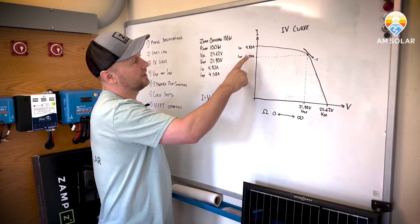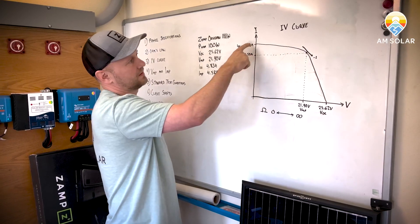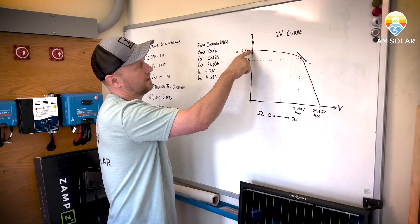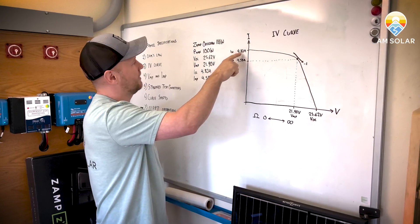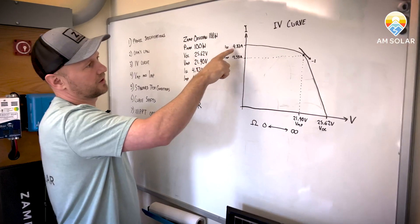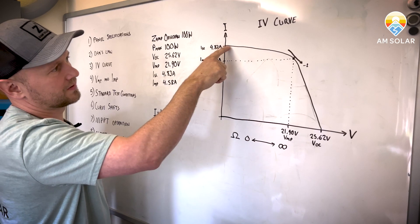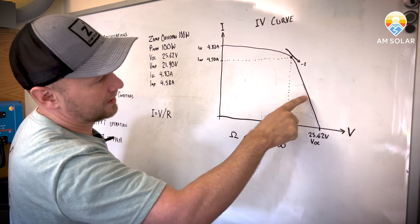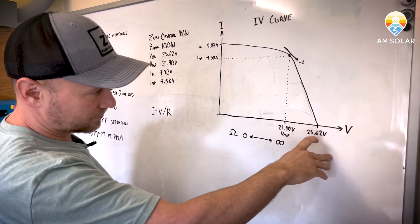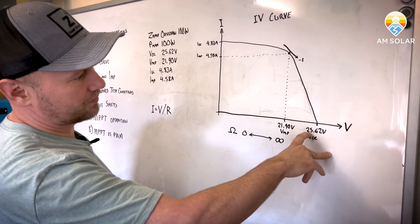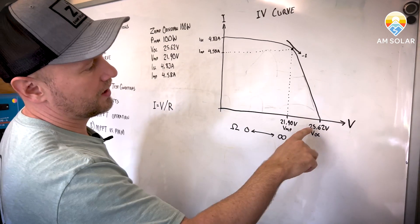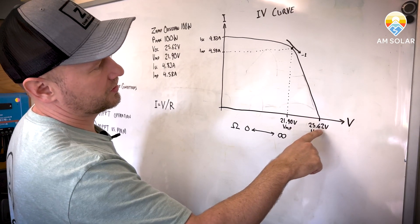So we see that this line, it crosses the Y axis or I for current right here at the ISC value. So current short circuit 4.83 amps. And it goes down like this, makes a dogleg and then heads down a little steeper down to the open circuit voltage point where the two terminals are just wide open. And it's 25.62 volts.